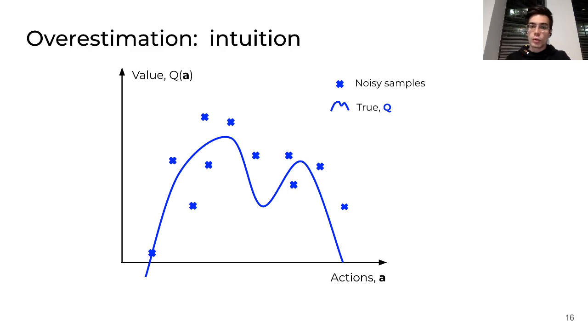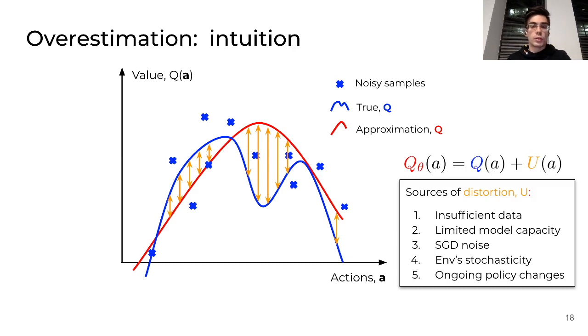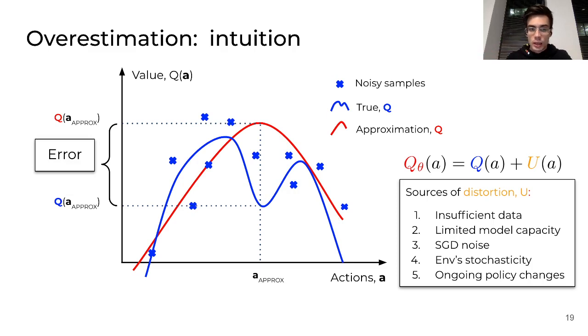Let's imagine there is some true value function, the blue line, but we have access only to some noisy samples, blue crosses. Then we try to fit, try to approximate, try to fit our approximation to these blue crosses. We do it imperfectly because we have some insufficient amount of data. We have some noise and it ends up with some distortion, that our approximation is not perfect. And then when we try to maximize our approximation, we often come up with some overestimation, with some error. Here is the visual intuition, and then I want to describe it from a more formal standpoint.